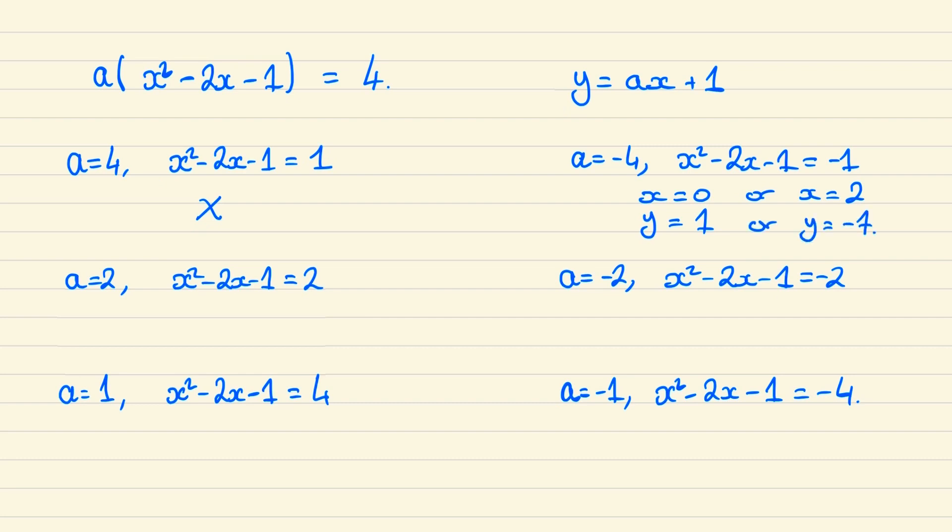In the case where a equals 2 we can have x equal to 3 or x equal to minus 1, and this leads to y equal to 7 or y equal to minus 1. And in the case where a equals minus 2 we have just x equal to 1 and so y is equal to minus 1.